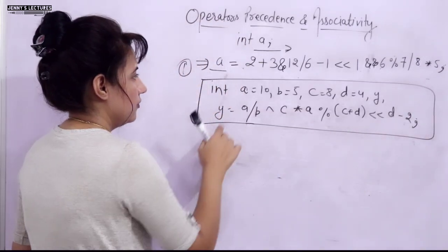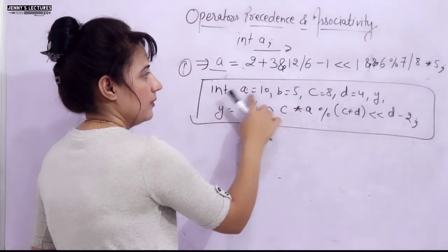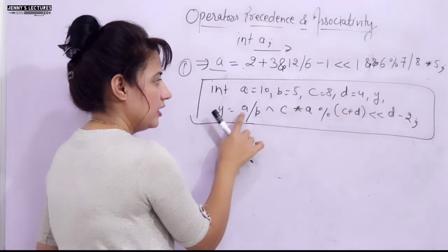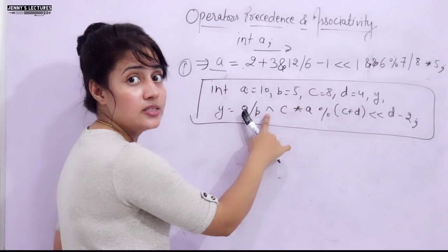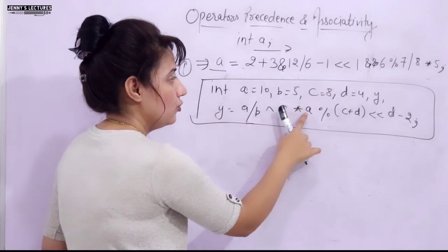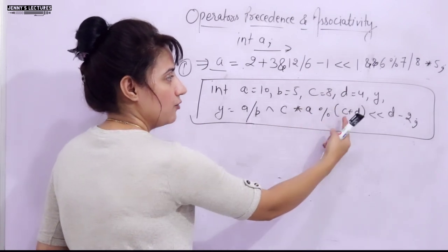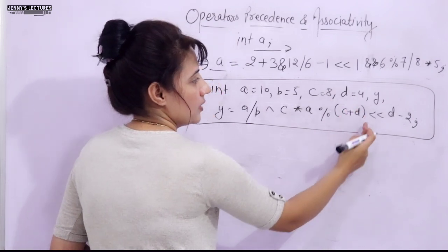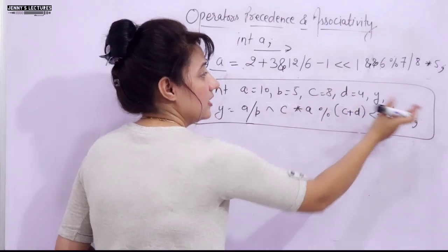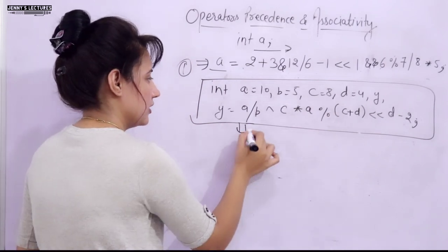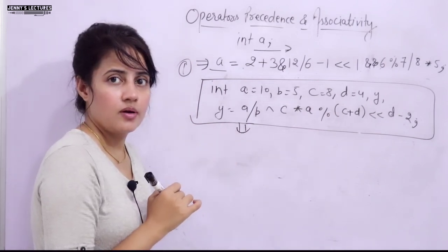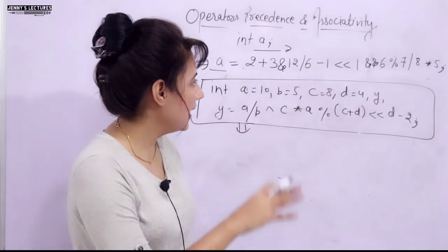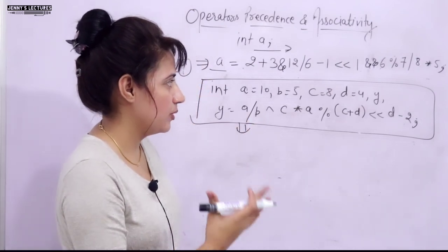One more question: Given four variables A, B, C, D with specified values, evaluate y = A/B ^ C*A % (C+D) << D - 2, where ^ is bitwise XOR. What is the value of y? Try solving it using precedence and associativity rules.